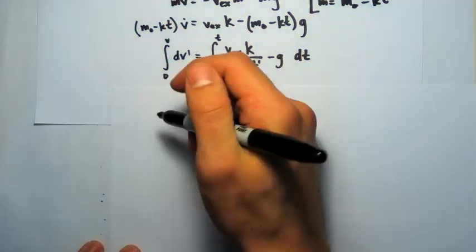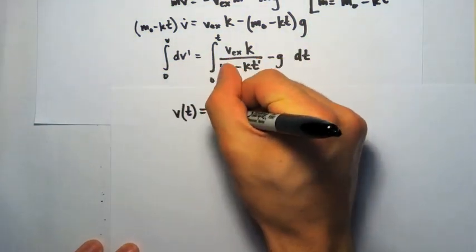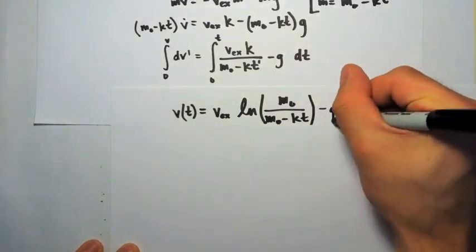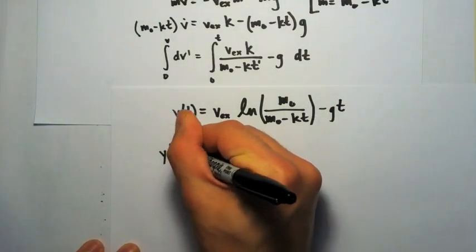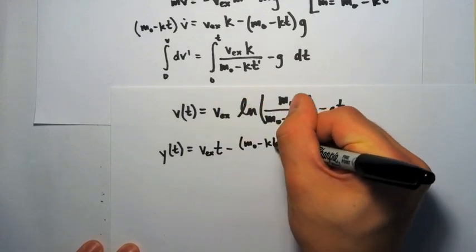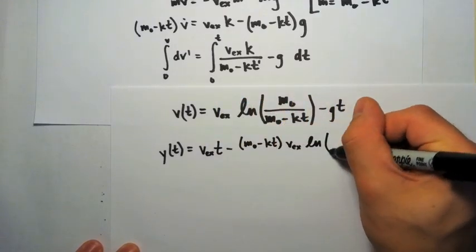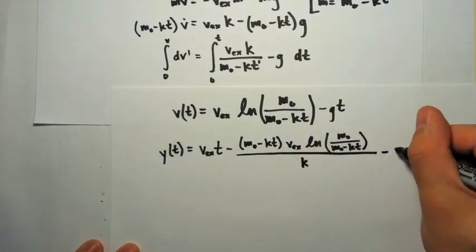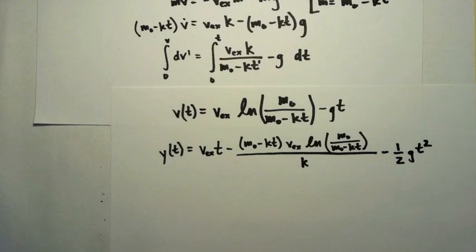Alright, so for our velocity equation, we get the exhaust velocity times the natural log of the initial mass over the mass as a function of time minus gt. And integrating again, we get an equation for our y position. In both of those equations, I left out the integrating constants, I set them both equal to zero, so the initial position and speed are zero.